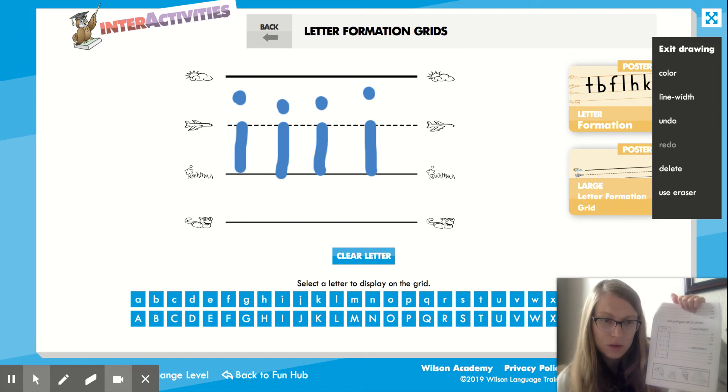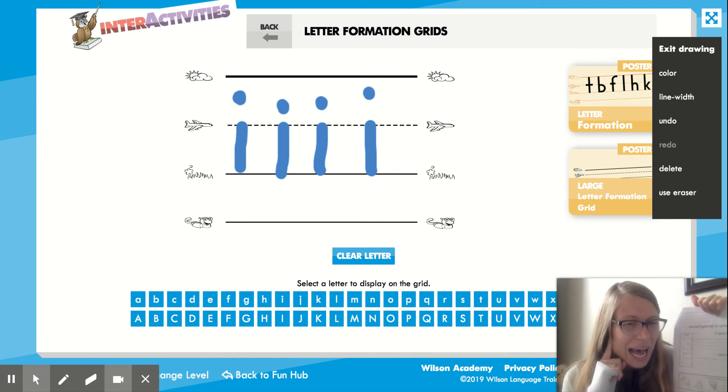Igloo, igloo, igloo—it, that's a short sound. Ice cream, ice cream, ice cream—I, the beginning sound in ice cream is I, that's the long sound. Inchworm, inchworm—it, that's the short sound.